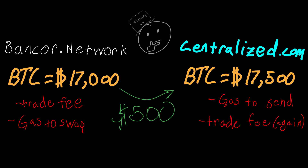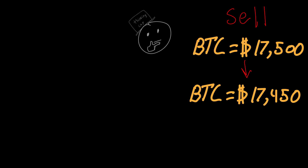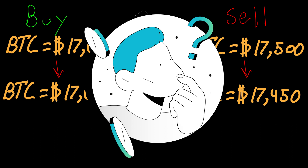And it does! You make about $300 on this particular trade, and now you see that because you sold Bitcoin, the price went down from $17,500 to $17,450. And because you bought Bitcoin, the price went up from $17,000 to $17,050. Wait a minute, can we do this again? You can!